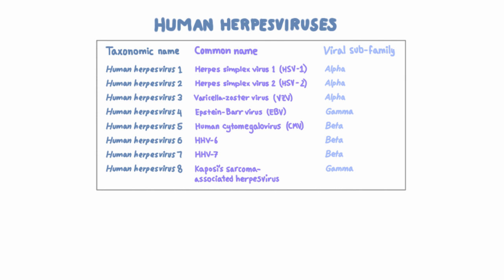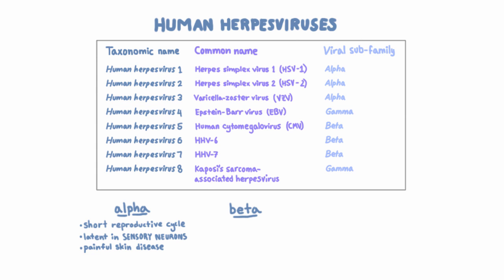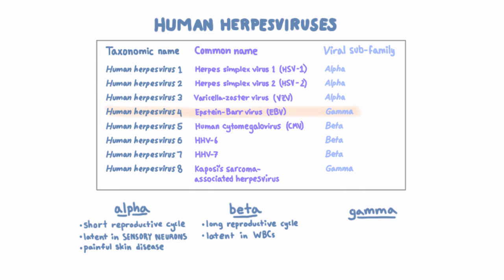All herpes viruses can be subdivided into three groups: alpha, beta, and gamma. Alpha viruses include HSV-1, HSV-2, and VZV. They have a short reproductive cycle, remain latent in sensory neurons, and the disease they cause is usually a painful infection involving the skin or mucous membranes. Beta viruses include CMV, HHV-6, and HHV-7. In contrast to alpha viruses, they have a long reproductive cycle and become latent in white blood cells. Finally, gamma viruses include EBV and HHV-8. The specific cells they become latent in are lymphocytes, and a really important thing to know about gamma viruses is that they are associated with cancer — we'll see why later.